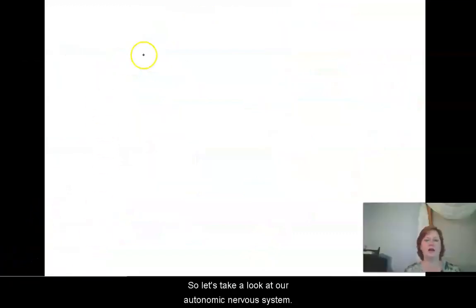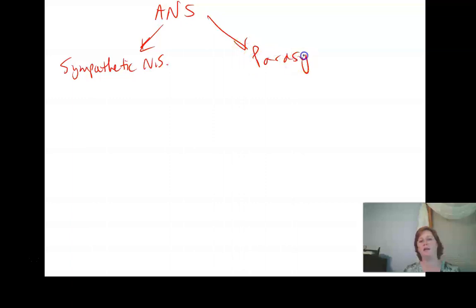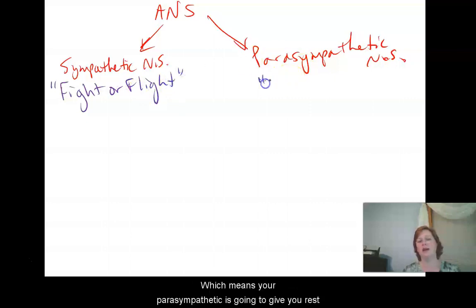So let's take a look at our autonomic nervous system, or the ANS. It can be divided into the sympathetic nervous system and the parasympathetic nervous system. Now you may have heard of these before if you've ever heard of fight or flight. So sympathetic division is your fight or flight response, which means your parasympathetic is going to give you rest and digest responses.